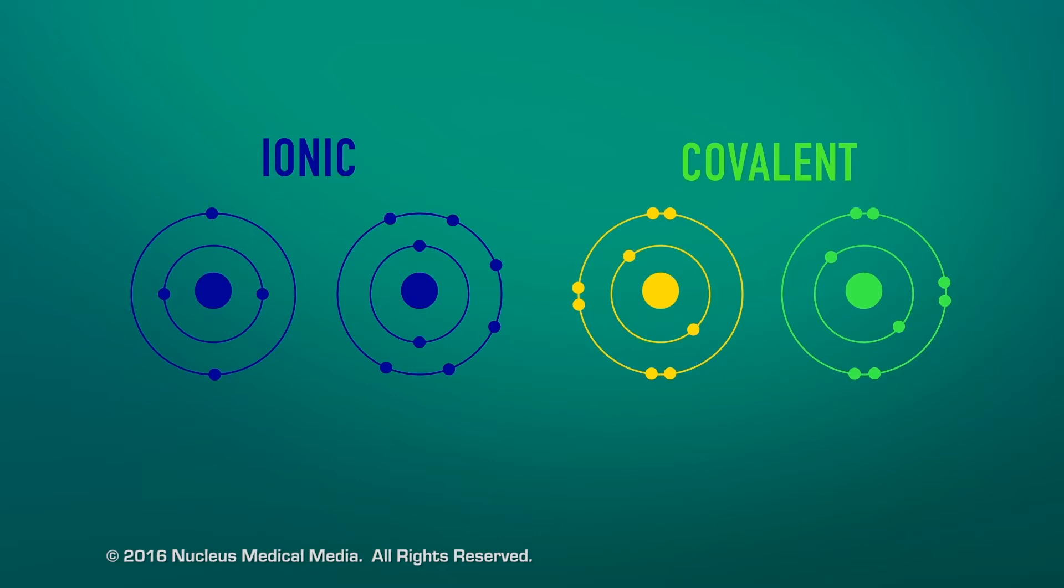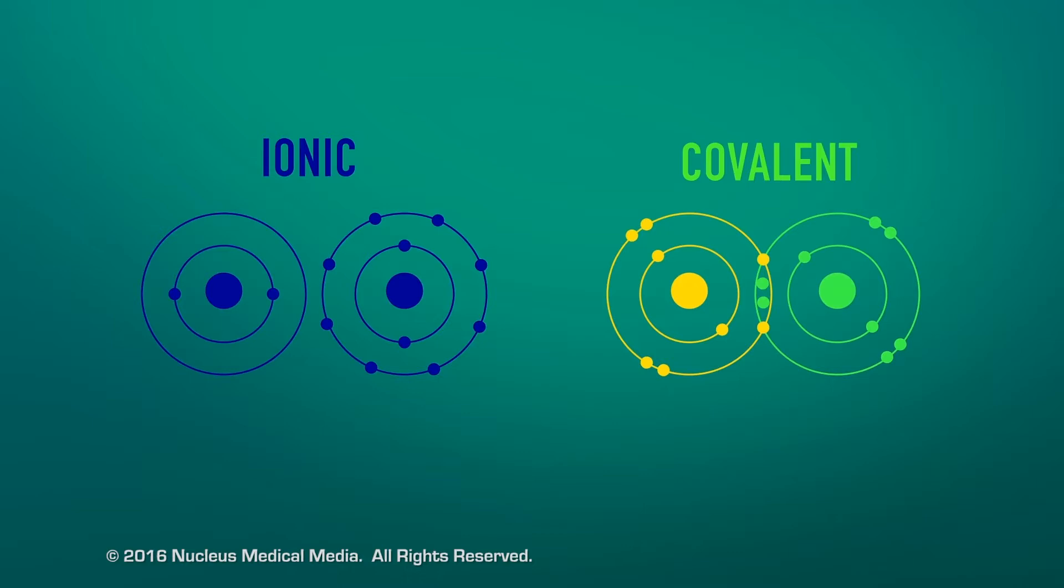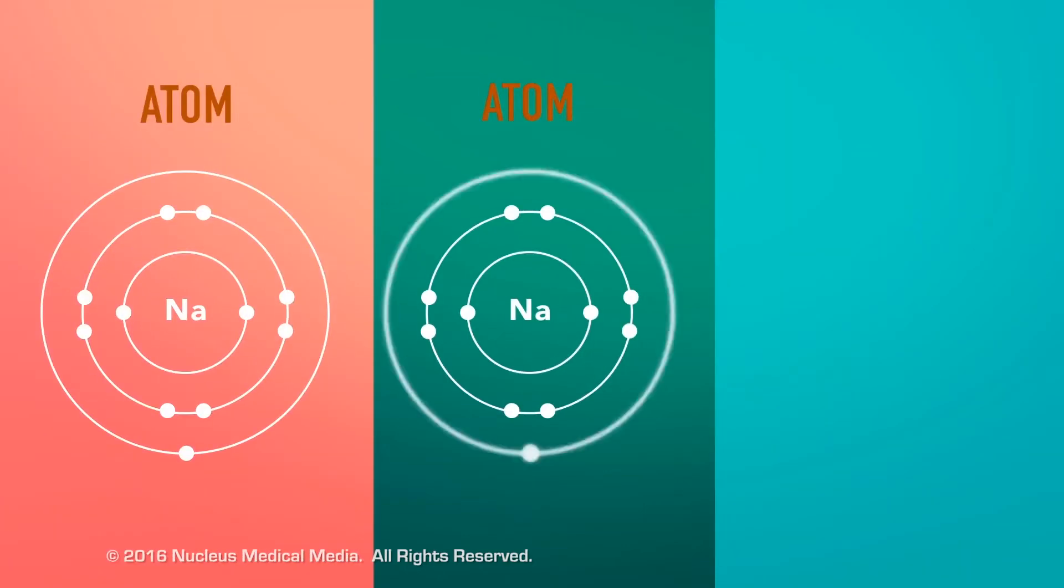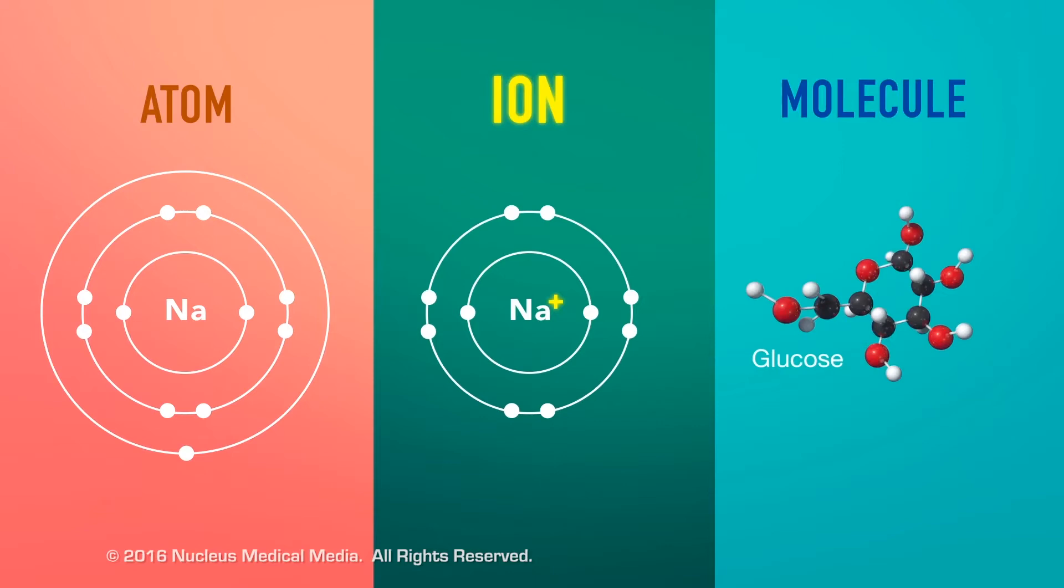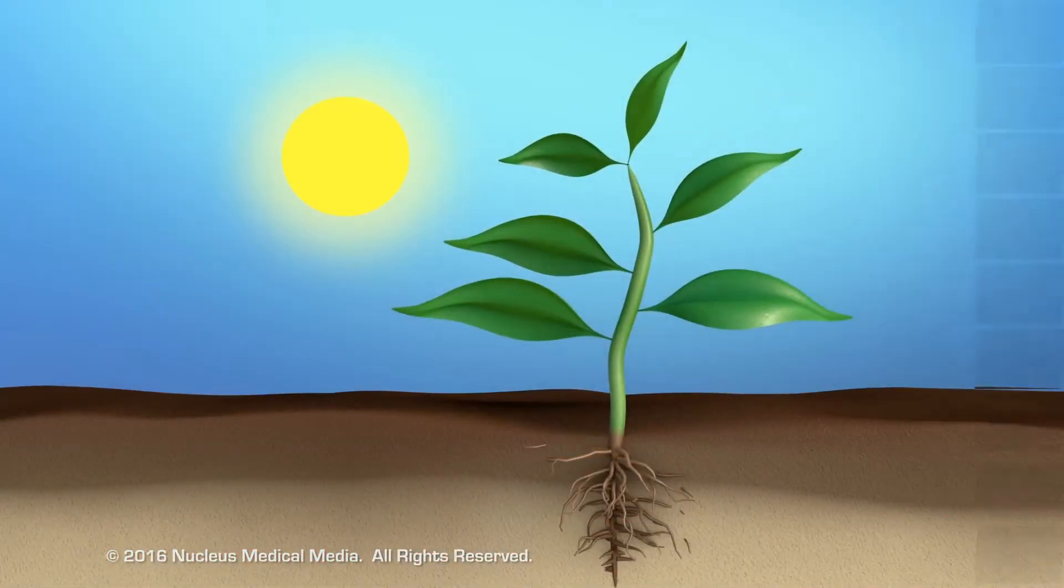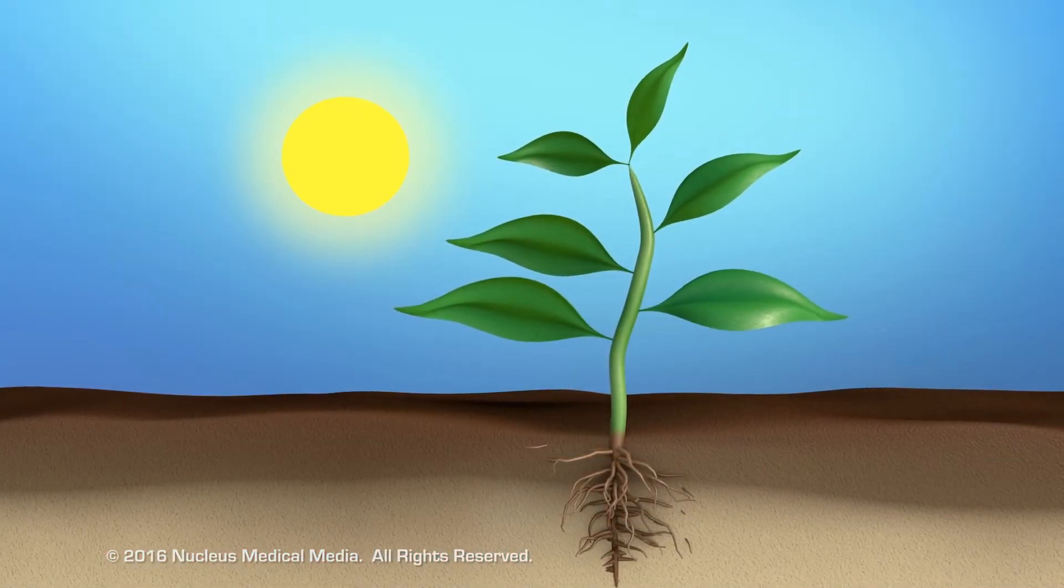Substances that take part in a chemical reaction may be ionic or covalent compounds, as well as the atoms, ions, or molecules of some elements. Let's look at an example of a chemical reaction.